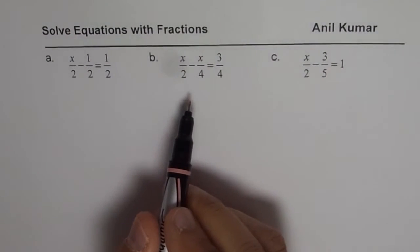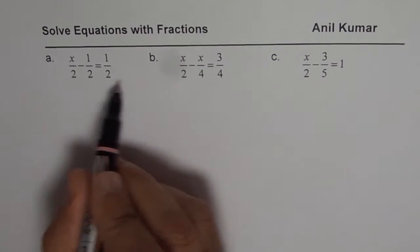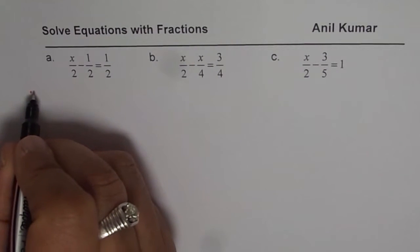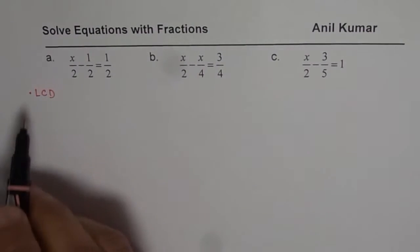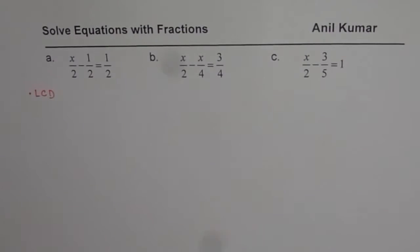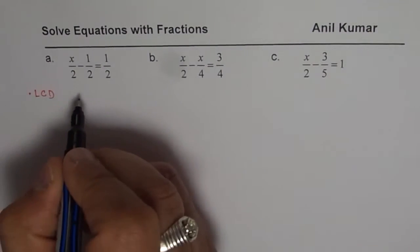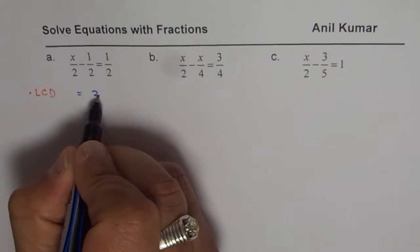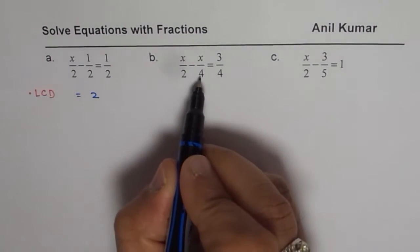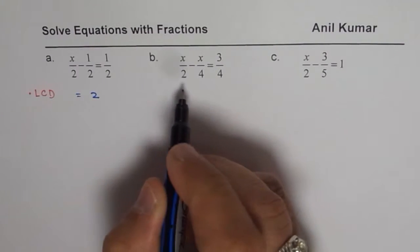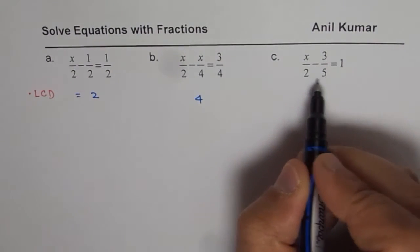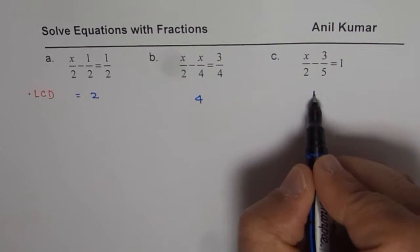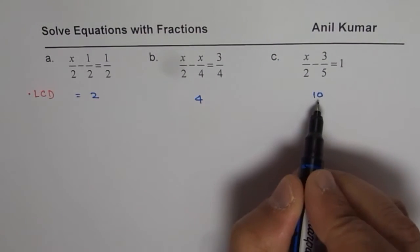The strategy as we discussed earlier is to find common denominator. So we say find least common denominator. So that is the first step. So in the first set of questions, here 2, 2, 2, so least common denominator equals 2 in this case. Here 2, 4 and 4, so least common denominator could be 4. 2 and 5, both are prime numbers, just multiply them so we get least common denominator as 10.